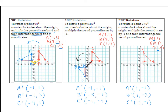Plot your new points: A prime at (1, negative 1), B prime at (1, negative 3), C prime at (4, negative 1) — connect them. Side AC was vertical, went around and around, and now it's horizontal. Connect A and A prime to the origin — this is a 270-degree rotation, and it does look like three-quarters of the way around a circle.